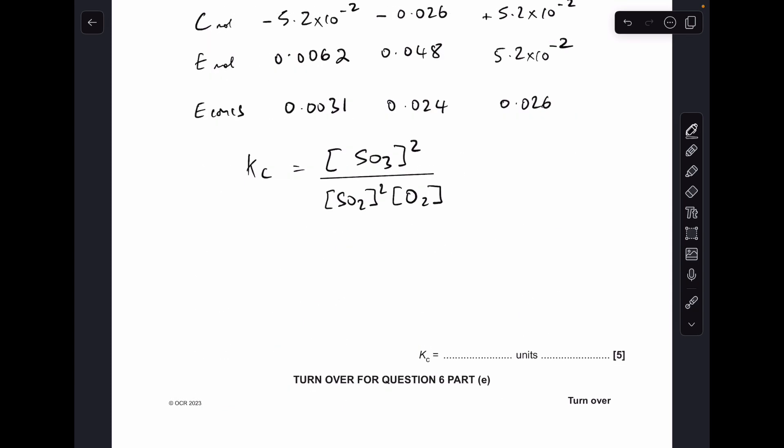So all we need now is the Kc expression, so I've written that up there, and we just need to put those equilibrium concentrations in. So when you do that, you should get 2931 for your Kc value, and the last thing we need to do is just look at the units.